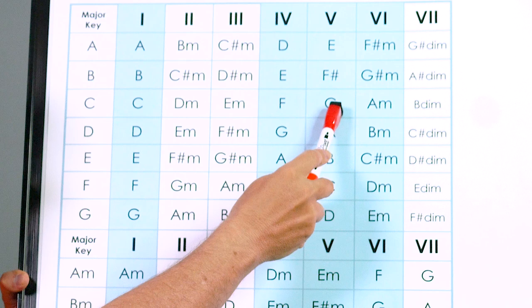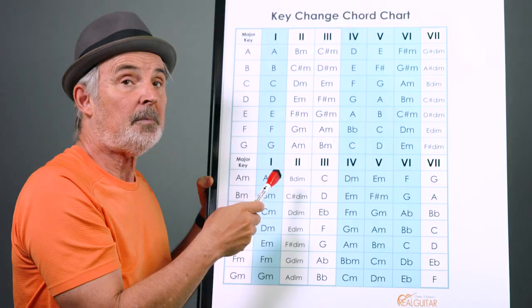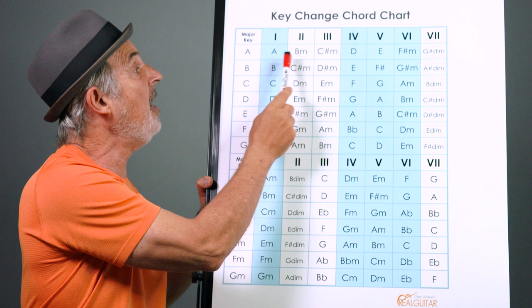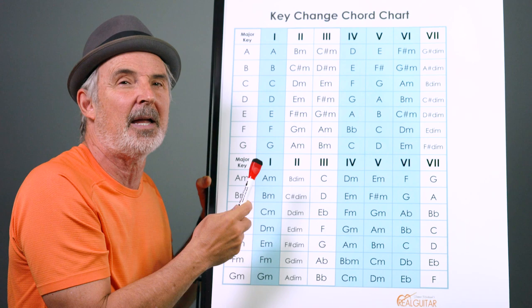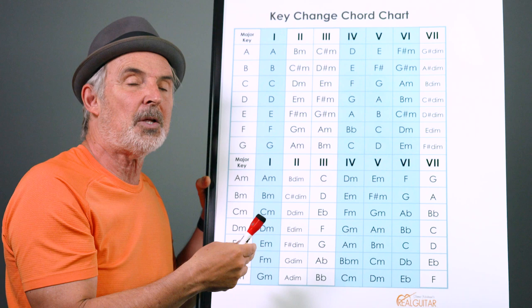I have students memorize these numbers because there are so many songs that use just a one, a four chord and a five chord. And if they memorize the basic keys of let's say five common keys, they can switch easy in their heads. Now it gets more difficult when you start adding more chords and the way to practice this is to take a song and actually cross off the chord that is in the key that you don't want anymore and write in the chord that you want.